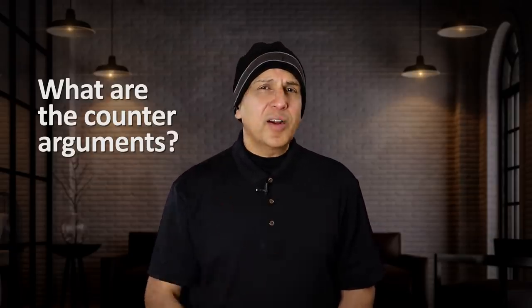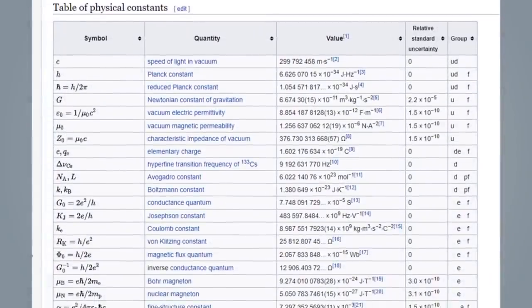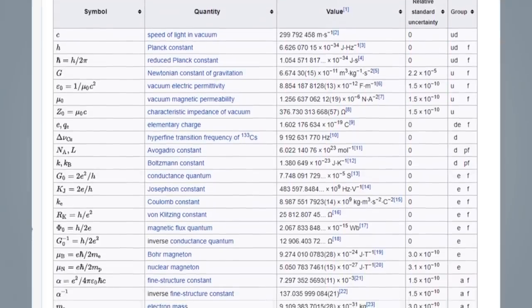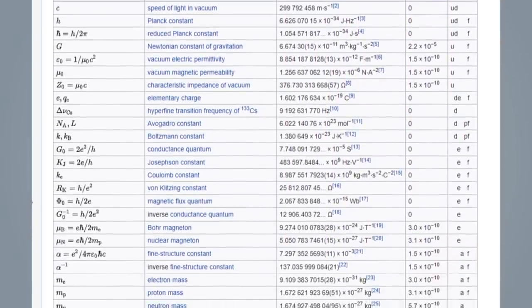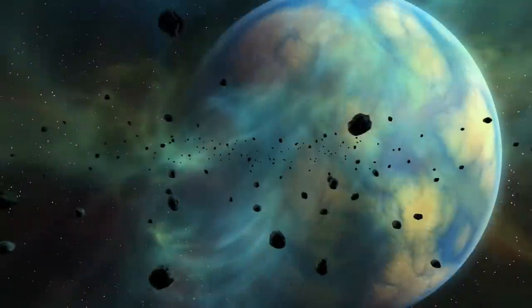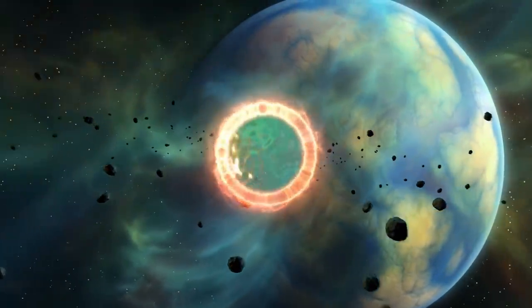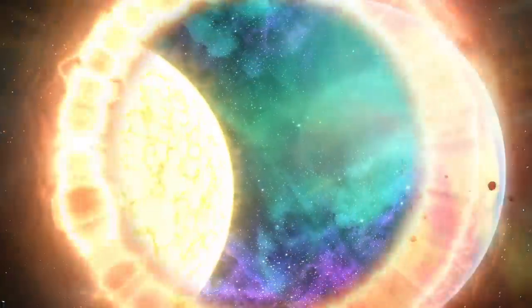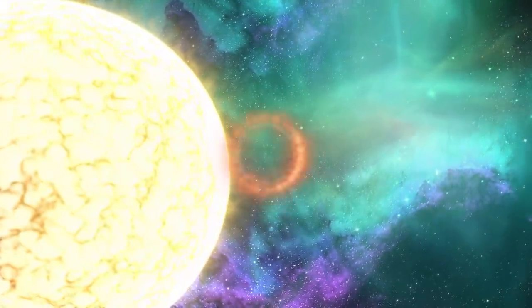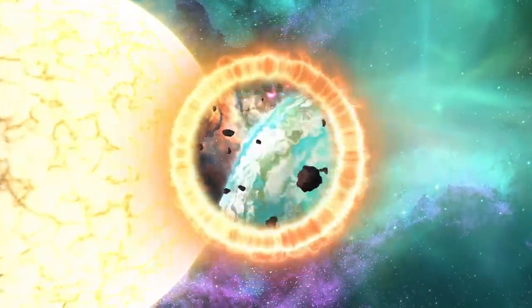In general, while the universe appears to have constants that need to be within a very precise range, such that even slight variations could result in a different universe, it does not follow that this is unnatural. There would be no basis to make that judgment because unnatural would mean that other constants could or should exist naturally. That is not the case.